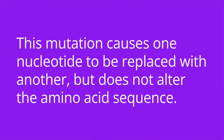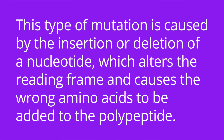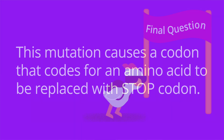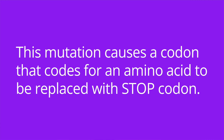It's quiz time — name that mutation! Number one: this mutation causes one nucleotide to be replaced with another, but does not alter the amino acid sequence. The answer is a silent mutation. Number two: this type of mutation is caused by the insertion or deletion of a nucleotide, which alters the reading frame and causes the wrong amino acids to be added to the polypeptide. The answer is a frameshift mutation. Number three: this mutation causes a codon that codes for an amino acid to be replaced with a stop codon. The answer is a nonsense mutation.